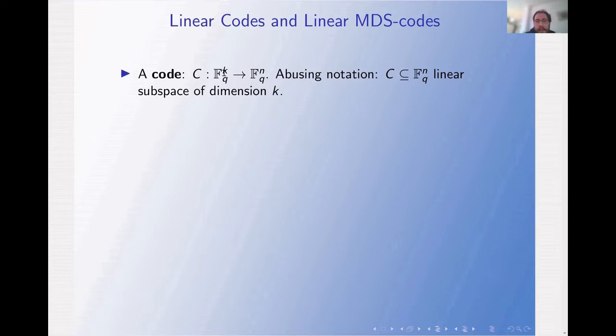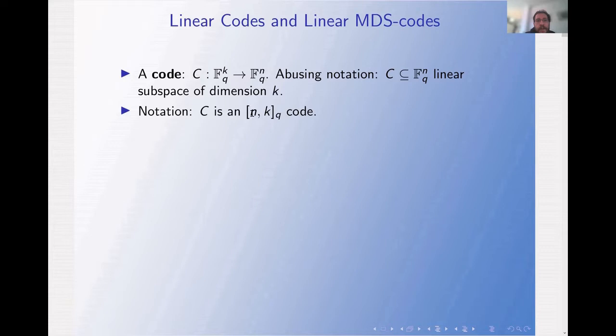The code in this talk is a map from F_Q^K to F_Q^N. We abuse notation and say that C is also the image of such a map. We say that C is a linear code if it is a linear subspace of dimension K. The notation we use is [N, K, Q] code, where N is the length of the code words, K is the dimension of the subspace, and Q is the size of the alphabet. Note that F_Q here means the finite field of order Q.